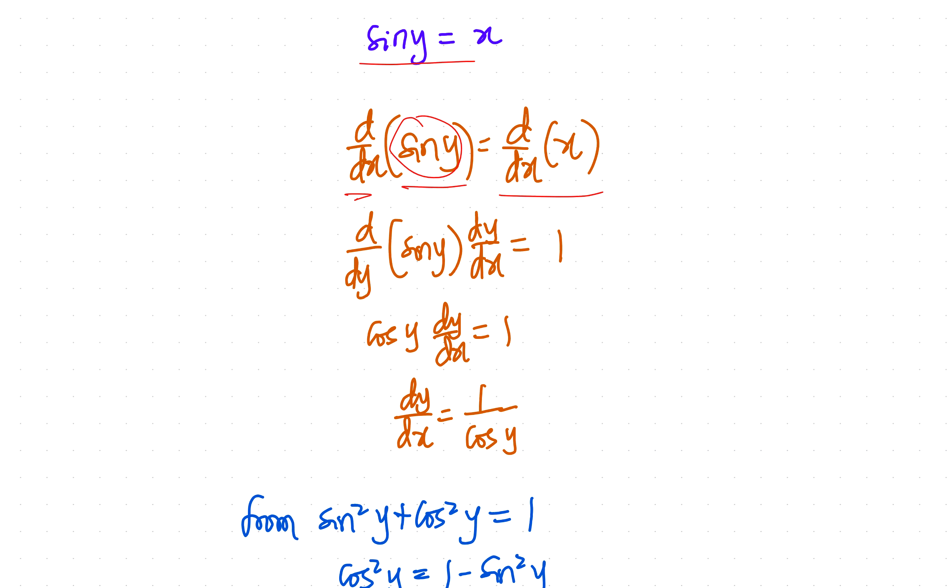And d dy of sine y, of course, when you differentiate sine y, you get cos y, and then the dy dx is still there. And then d dx of x is like differentiating x, and that's one. So you have cos y dy dx equals one. Since what you're looking for is dy dx, then you can divide both sides by cos y, so that this cancels out. And that is what leads to the next line, where we have dy dx equals one over cos y.